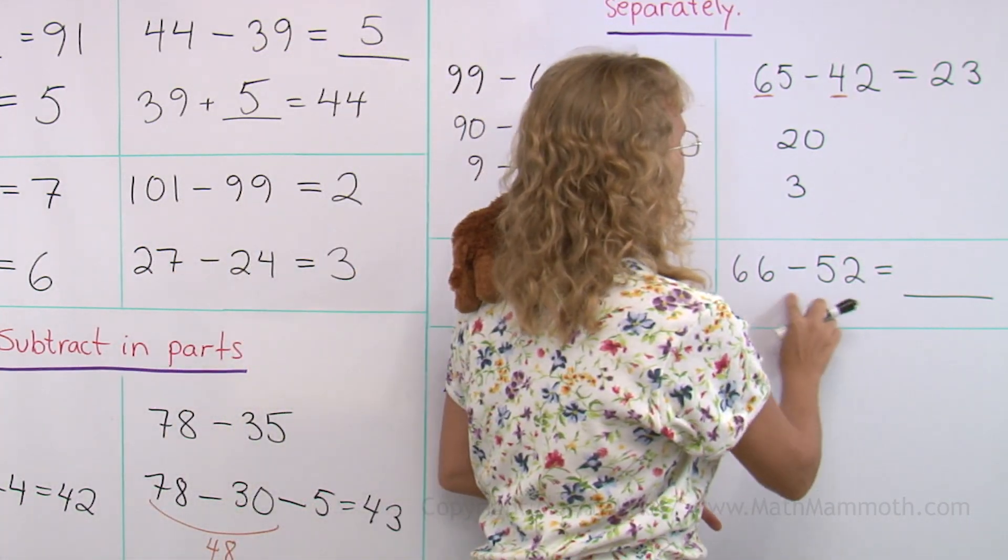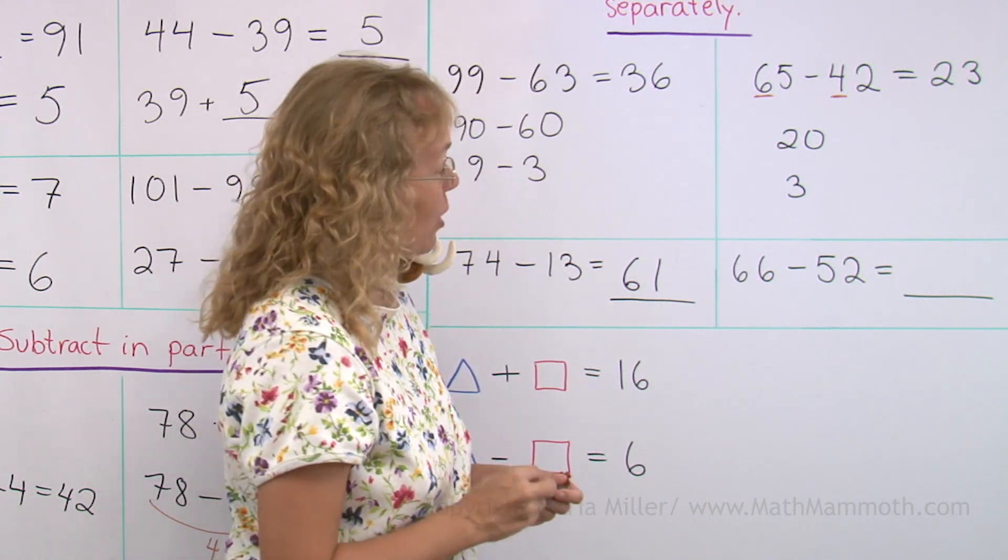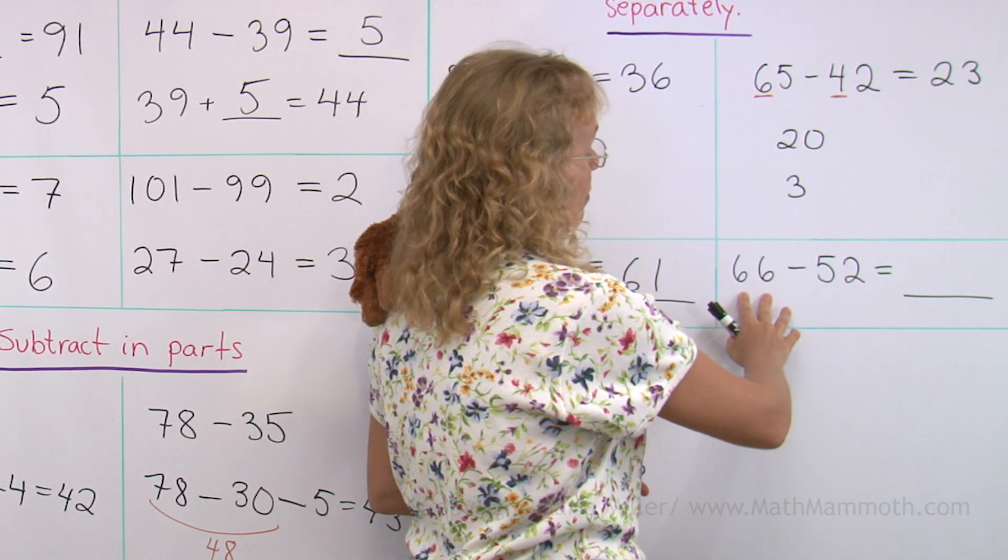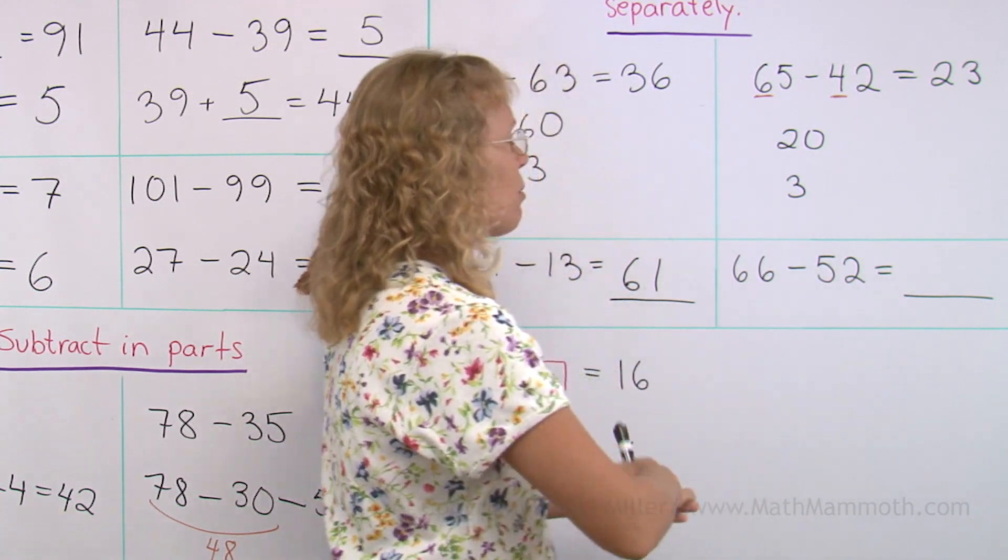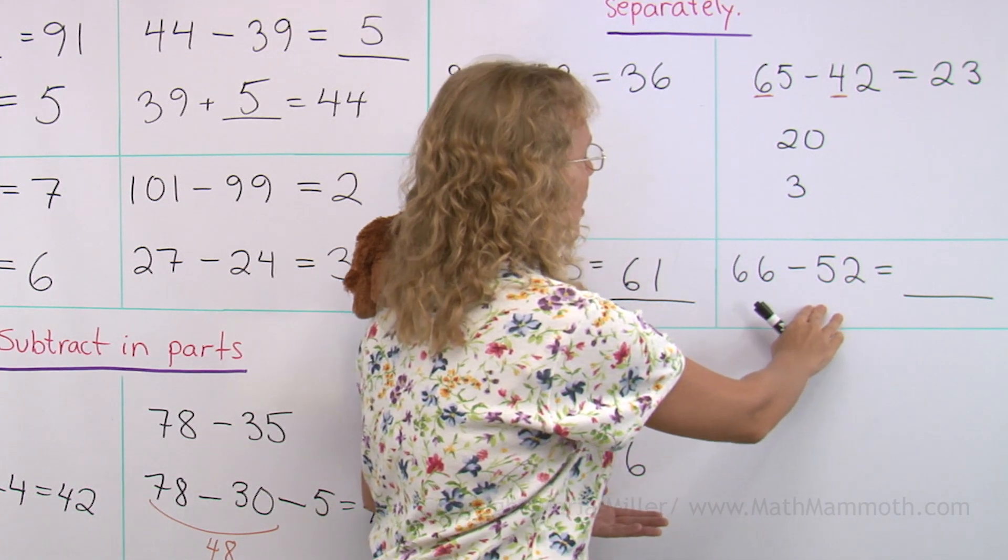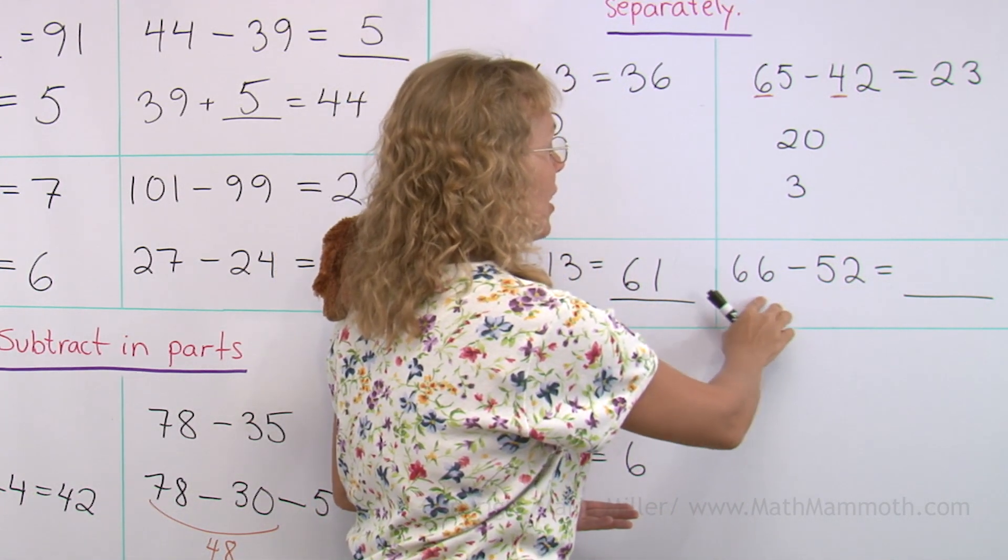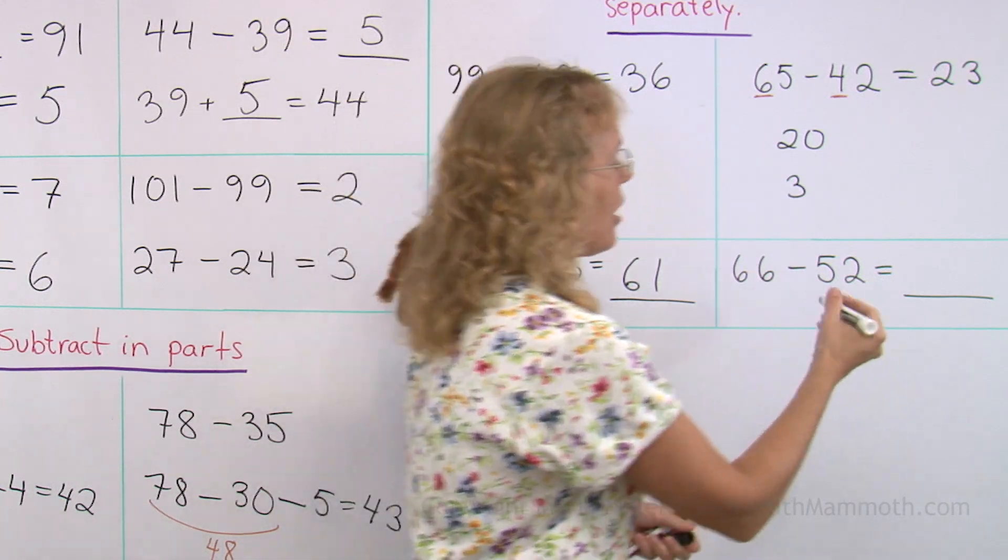66 minus 52. Maybe we think of the difference. That's what I tend to think in this one. 52 and add back how many to get to 66. And the answer is I have to add 10 and 4. Or the answer is 14.